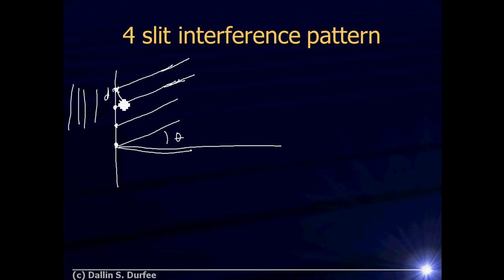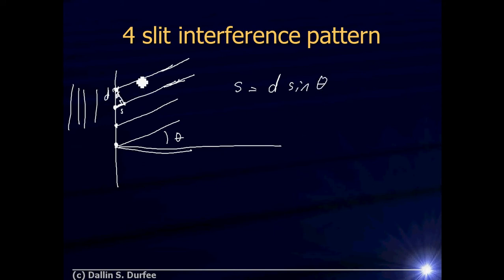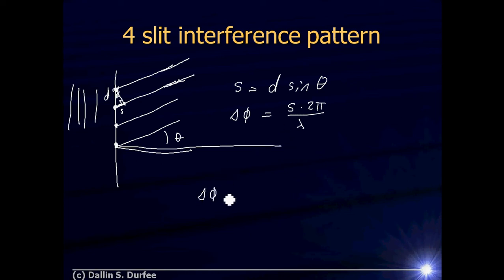We'll draw a little right triangle. From here to the screen is the same distance as from here to the screen — it's just this little segment that is different, a different path length. If I call that distance S, this angle here is theta, and we find that S is just going to be equal to d·sin(θ). The difference in phase between adjacent beams, delta phi, equals S times 2π per wavelength, giving delta phi = 2π·d·sin(θ)/λ.